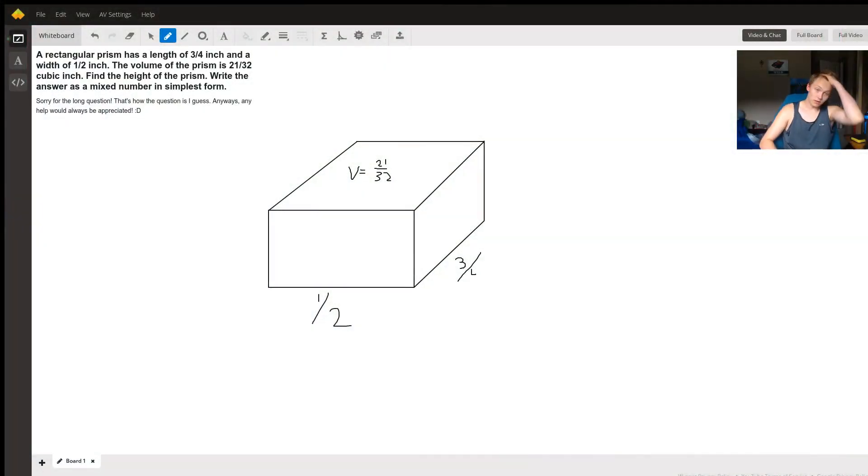Hi, so here we have a question about the volume of a rectangular prism, and in particular we're being asked to find the height. To find the height we need a variable that relates height and volume, and we also have information about the length and the width of this prism.